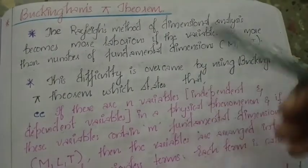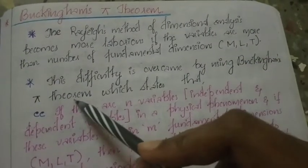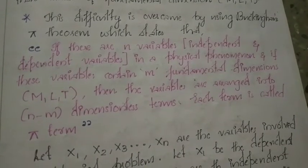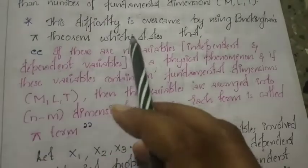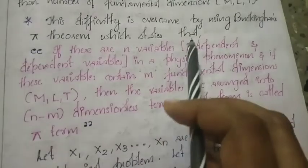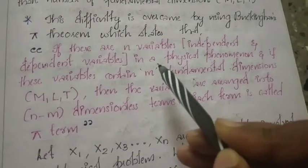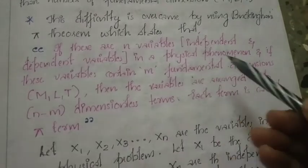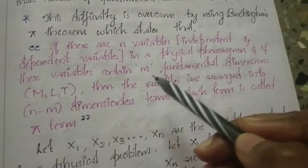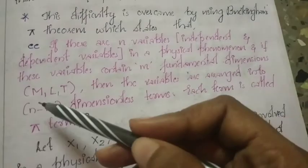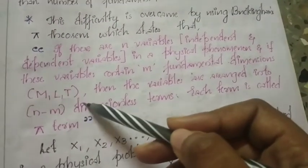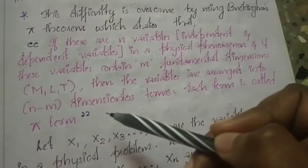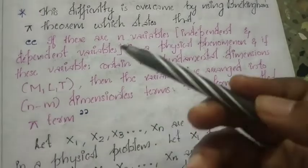To overcome that difficulty, we use Buckingham's Pi theorem. It states that if there are n variables — both dependent and independent — in a physical phenomenon, and these variables contain m fundamental dimensions (M, L, T), then the variables can be arranged into n-m dimensionless terms, and each term is called a Pi term.